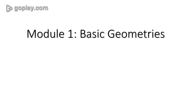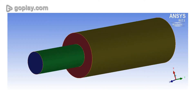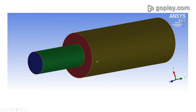We are in module 1, which concerns basic geometries. We have covered several basic geometries till now. In this video lecture we will cover the geometry of two cylinders joined together end on end. This is how the geometry looks — there are two cylinders of different diameters joined end on end.